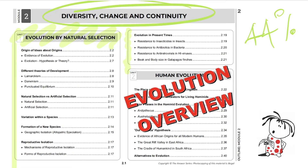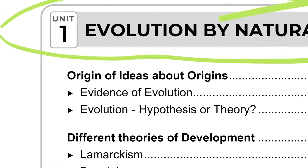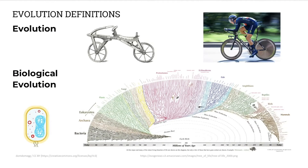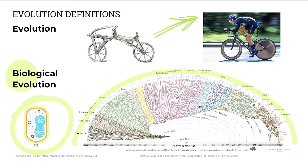Hold on tight, it's a whirlwind tour. First of all, we'll look at some definitions — origin of ideas about origins — including hypothesis and theory. What is evolution? Evolution is change over time in anything: bicycles, aeroplanes, chemicals, art, language. Whereas biological evolution is looking at change over time in living things — genetic changes that are inherited in populations over time, from simple organisms like viruses and bacteria to the huge diversity of living things we see on planet Earth.